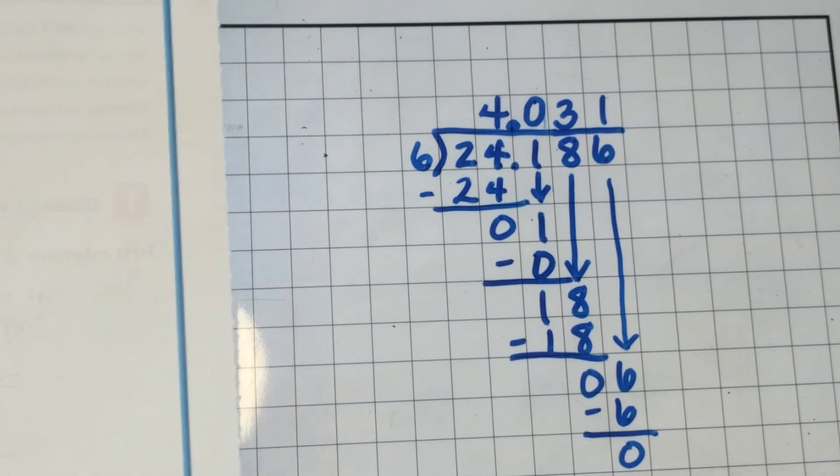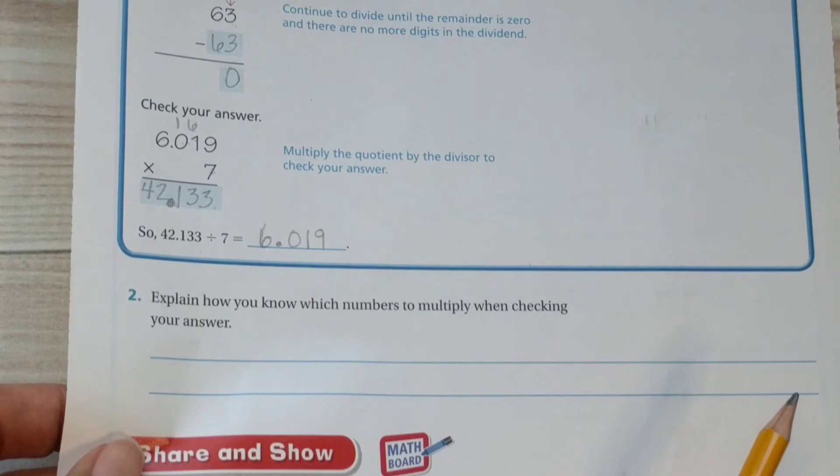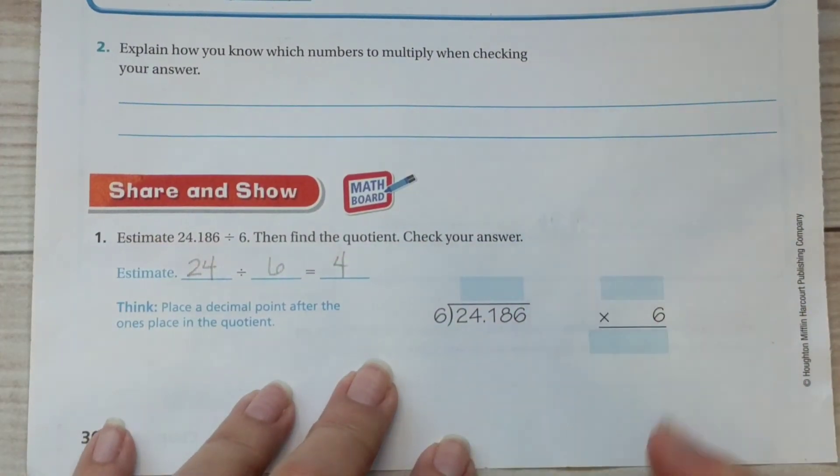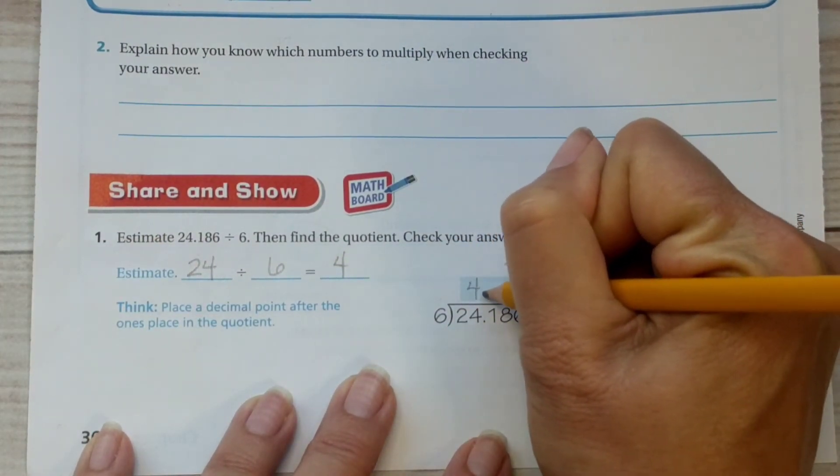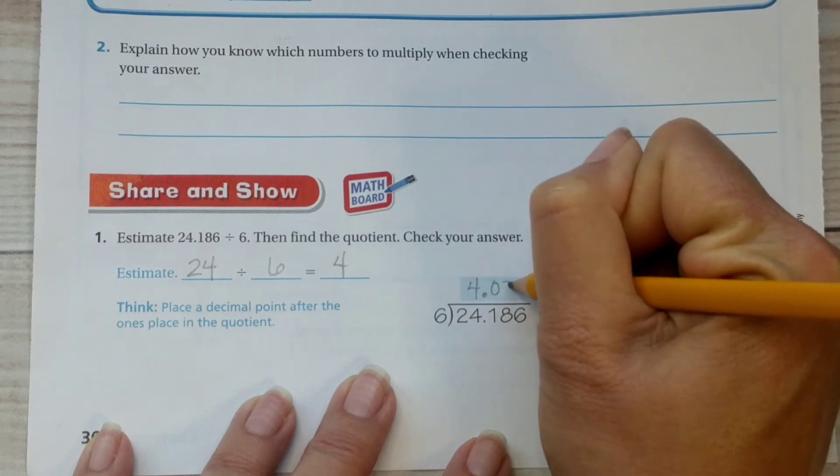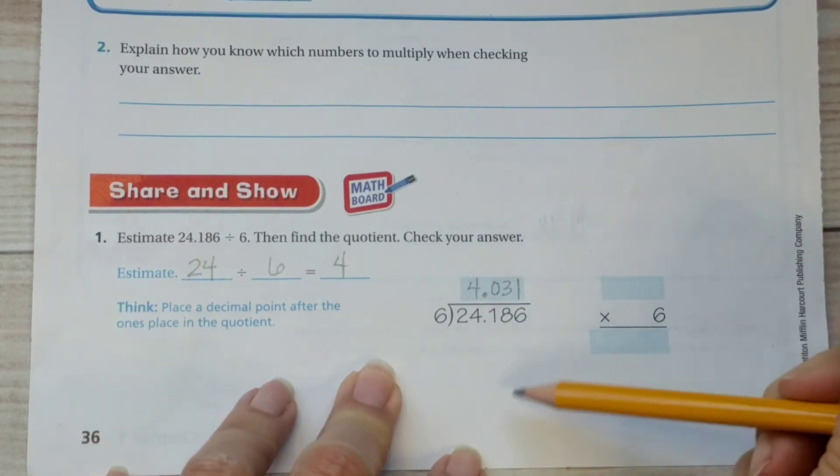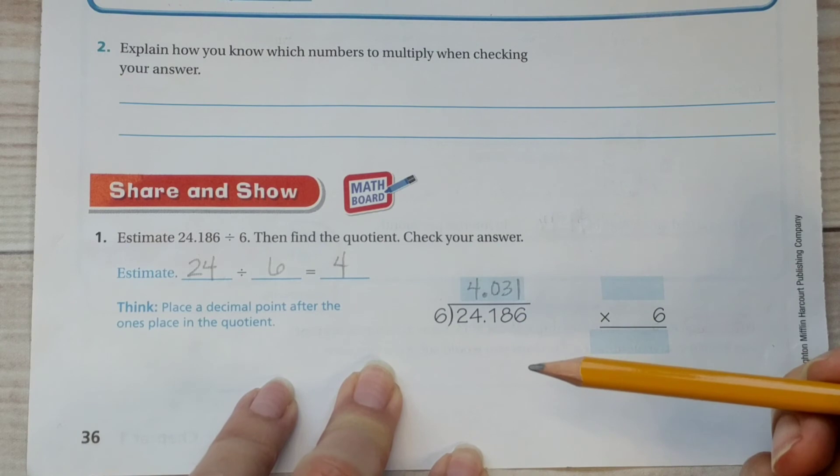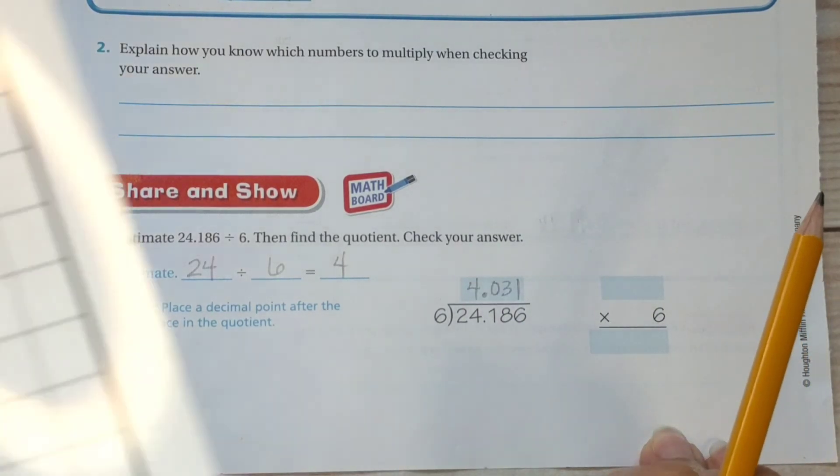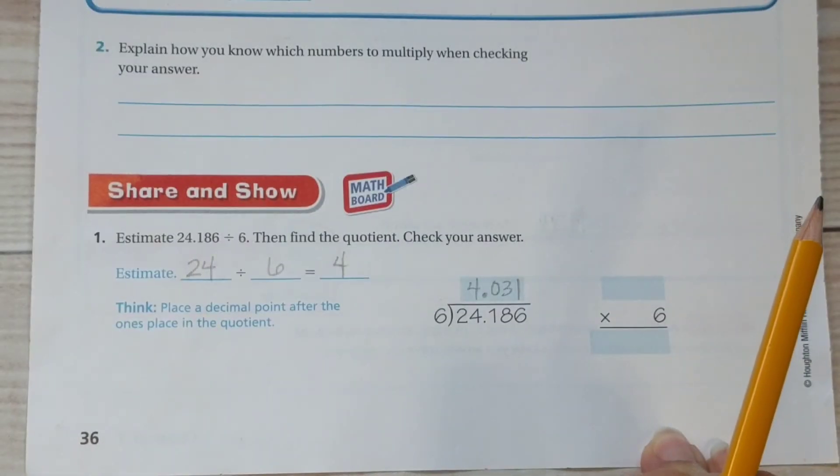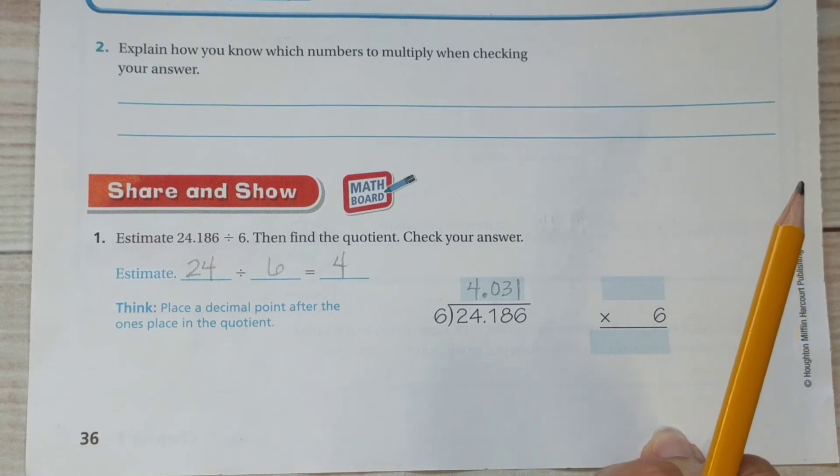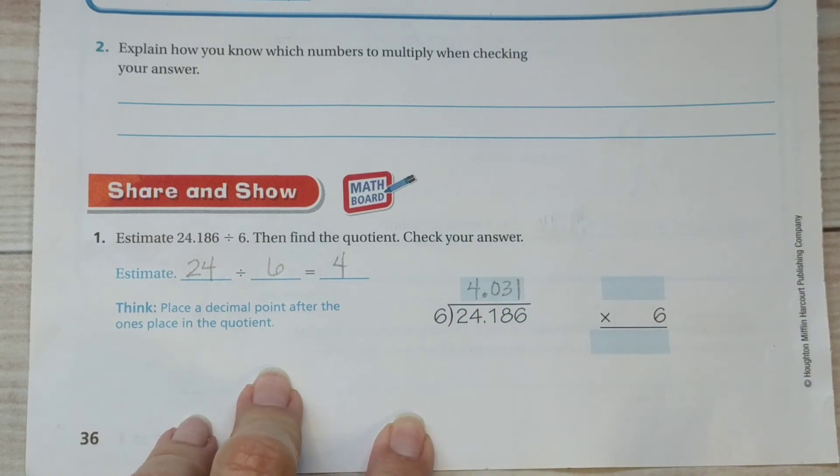We ended up with four and thirty-one thousandths for our final answer. If I was turning this in and this was blank, I would staple, if I'd written on a piece of scratch paper to do my work, I'd staple that on and show it to the teacher because they want to see that you know how to do the work and that you didn't just use a calculator to get this answer.